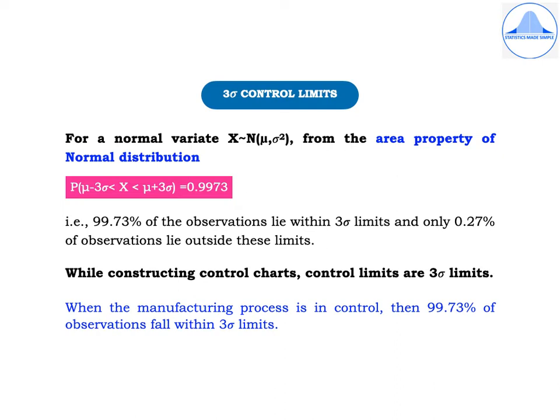When the manufacturing process is in control, then 99.73% of observations will fall within these 3 sigma limits.